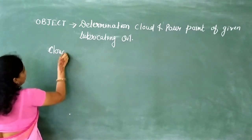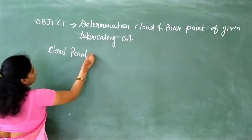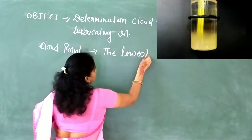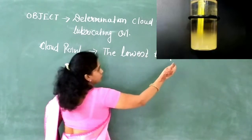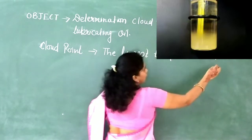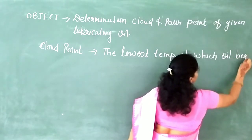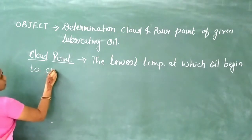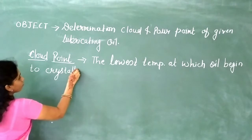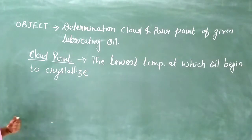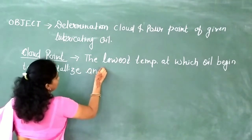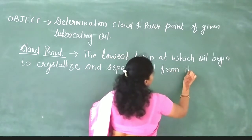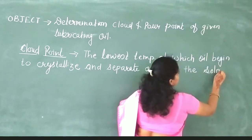A teacher may ask how to define cloud point, so you have to give a proper answer. The cloud point is the lowest temperature at which oil begins to crystallize or solidify and separate out from the solution.